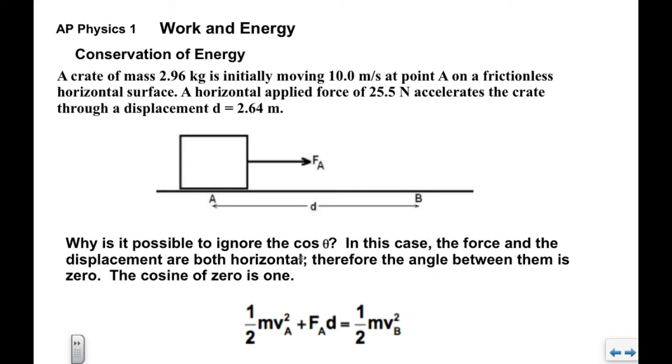We can ignore the cosine theta in this case because F_A is horizontal and d is horizontal. So if they're both in the same direction, the angle between them would be zero. Cosine of zero is one, so we can ignore the cosine theta there.